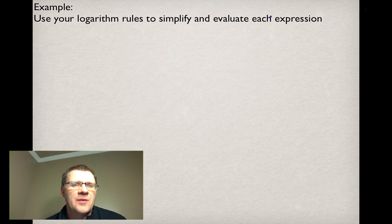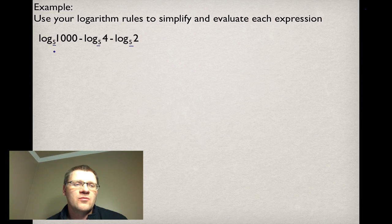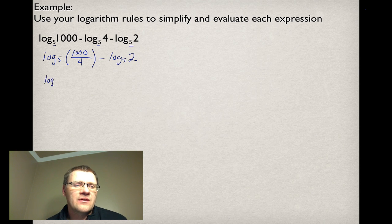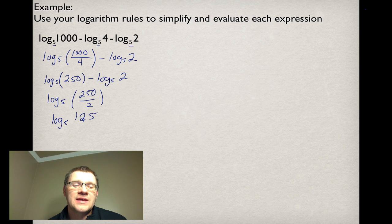Next, use logarithm rules to simplify and evaluate: log₅(1000) − log₅(4) − log₅(2). Since all bases are the same, we can combine. Subtracting means dividing: log₅(1000/4) = log₅(250). Still subtracting log₅(2), so divide again: log₅(250/2) = log₅(125). Now evaluate: what exponent gives 5 to get 125? That's 3, since 5³ = 125. The answer is 3.